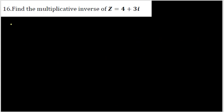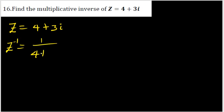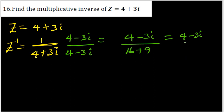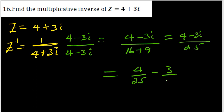Next question: find the multiplicative inverse of the complex number 4+3i. The inverse is 1/(4+3i). We can't leave it like this — we must multiply by the conjugate: (4-3i)/(4-3i). The denominator becomes 16+9 = 25, so the result is (4-3i)/25, which in standard form is 4/25 - (3/25)i.